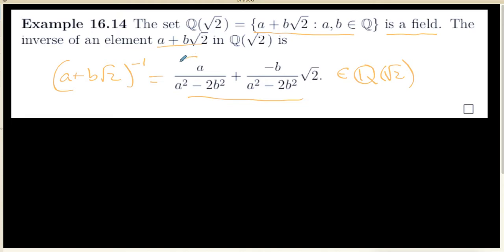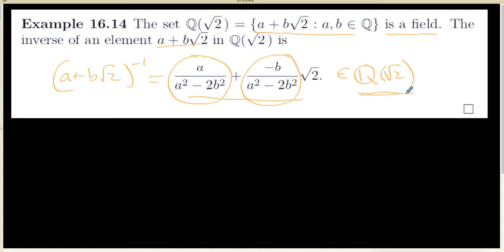The author has not really addressed why these two circled numbers are rational, because they have to be rational in order to put this expression in this particular set. The other thing I want to mention is that this particular set is usually referred to as Q adjoin the square root of 2.